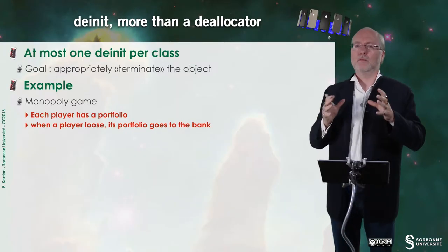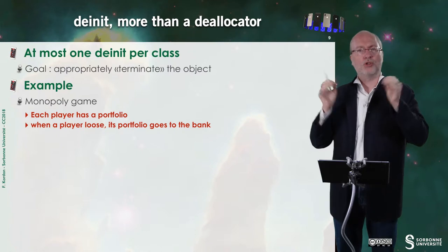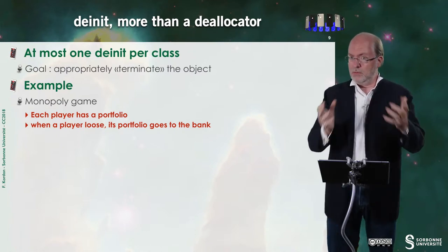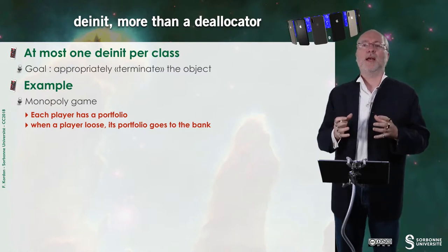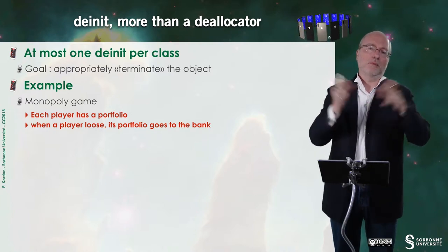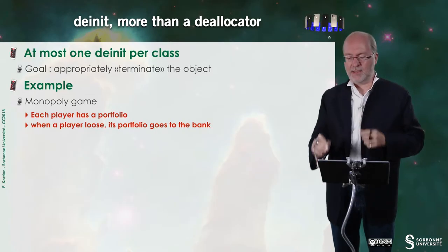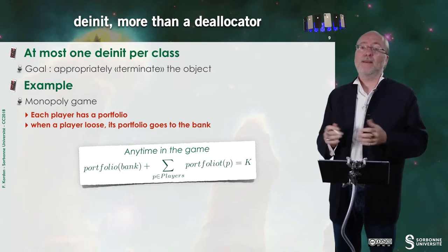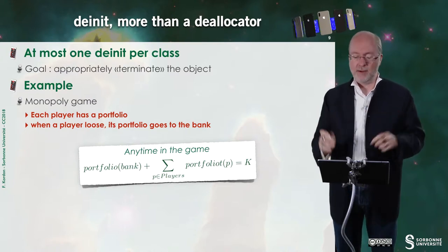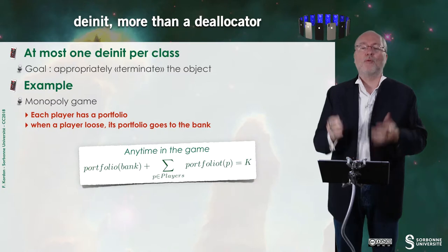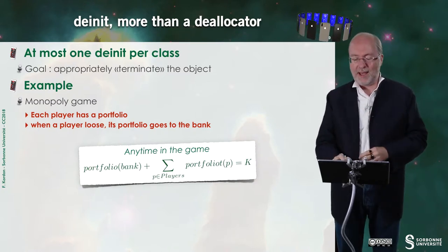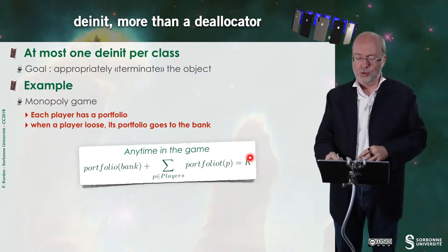Let's imagine we are programming a Monopoly game. Each player has a portfolio. When the player loses, he leaves the party but his portfolio goes to the bank. Every time in the game, I have a sort of invariant: the total amount of money circulating. The sum of what is in the bank plus the sum of what every player has should equal the total amount of money — not in real life modern economy.